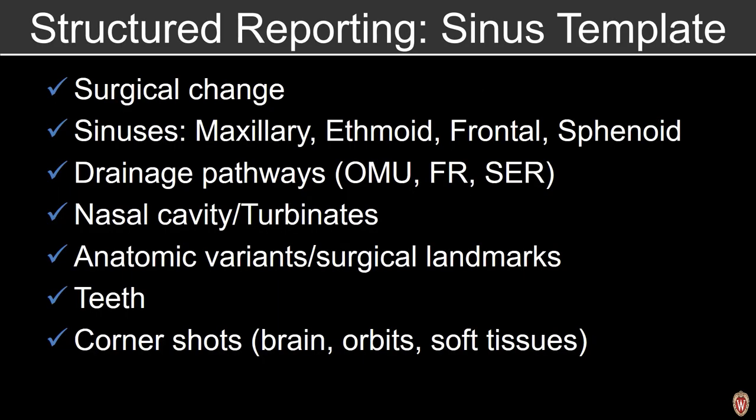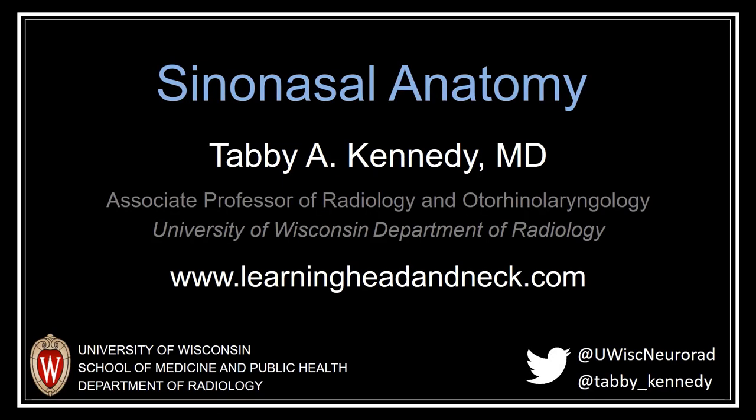When evaluating a patient presenting with sinus symptoms, it's important to go through a checklist approach. We'll evaluate for surgical change, look at the sinuses and evaluate for the degree of mucosal thickening, review drainage pathways and comment on areas of anatomic compromise. We'll take a look at the nasal cavity, turbinates, and nasal septum, and really focus on calling out anatomic variants and surgical landmines for our surgical colleagues. We'll also take a look at the teeth and the corner shots. Thank you for your attention.